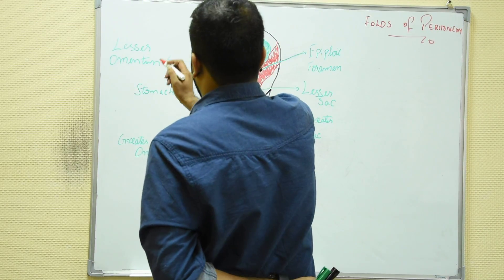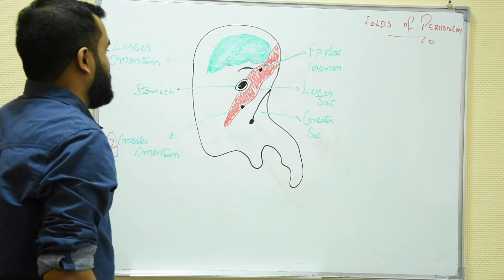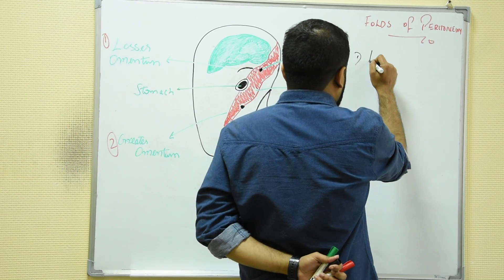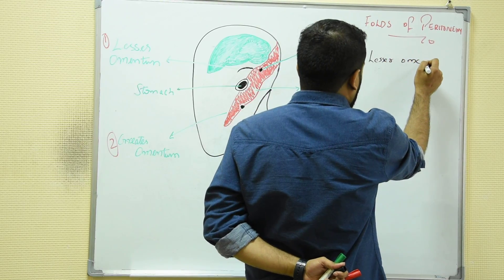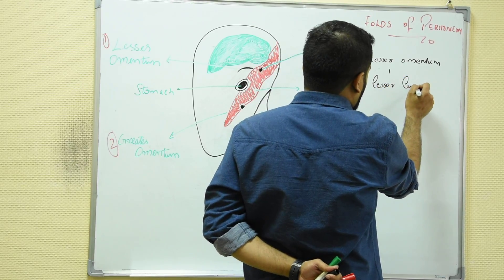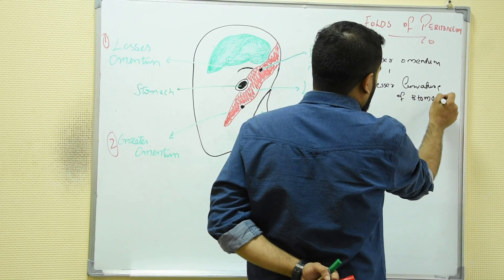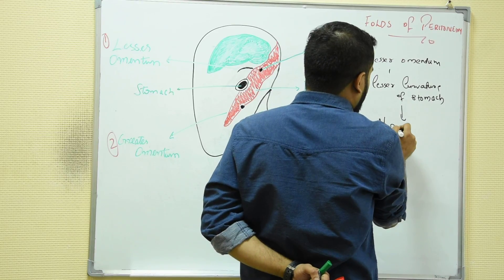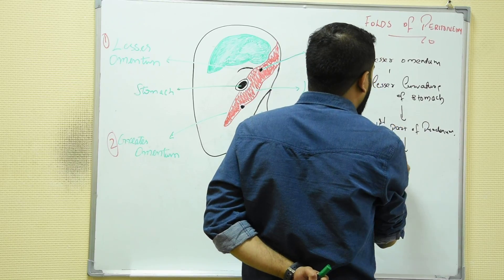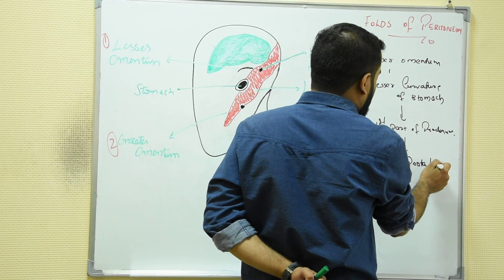The first important fold is the lesser omentum. Then we have the greater omentum. The lesser omentum connects the lesser curvature of the stomach and the first part of the duodenum, and it ends in the liver at the porta hepatis.